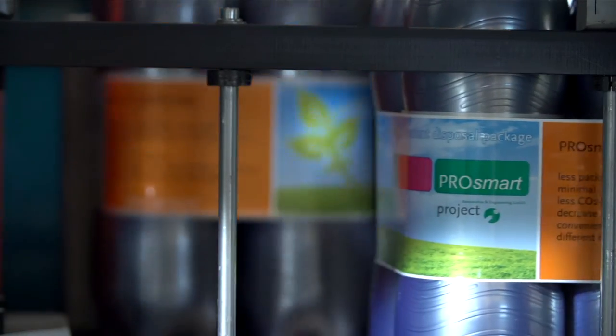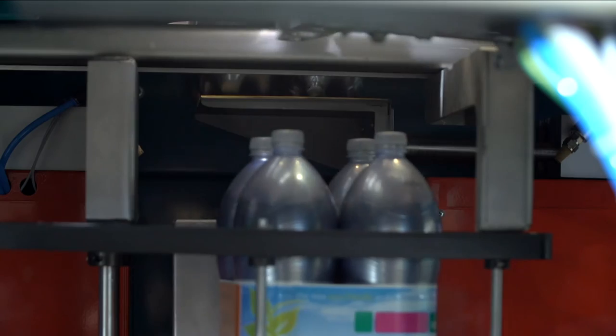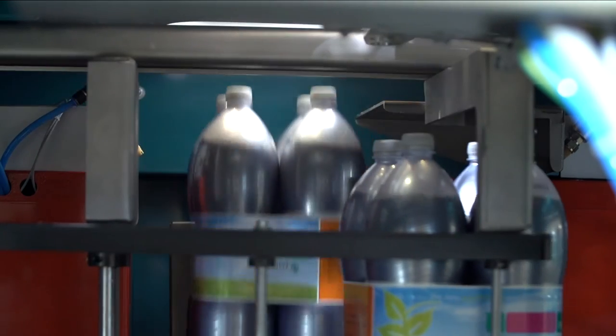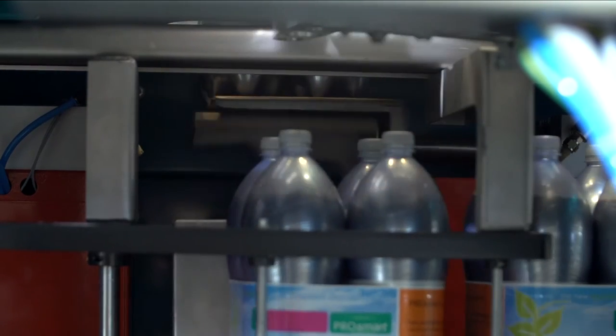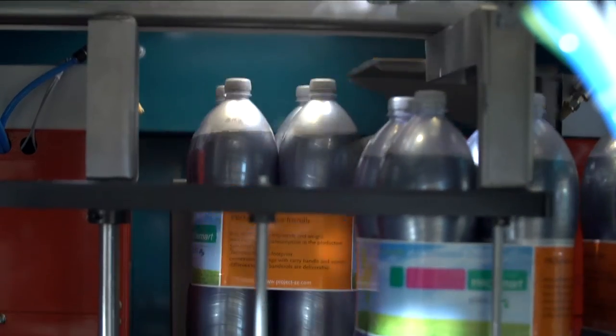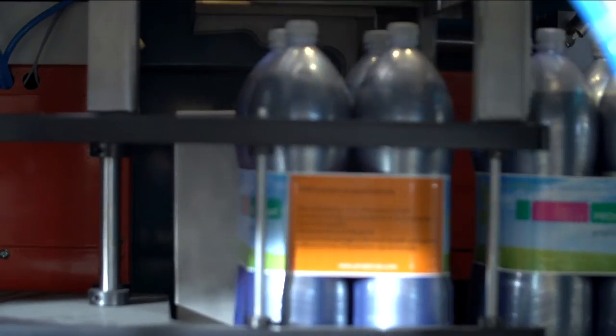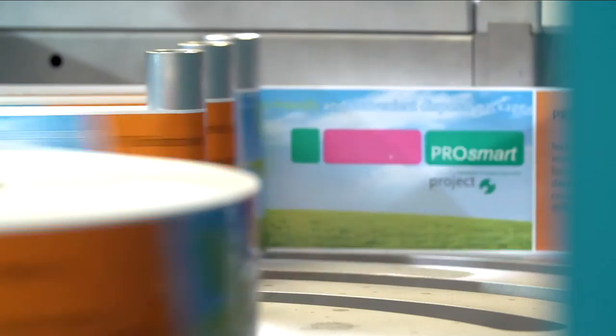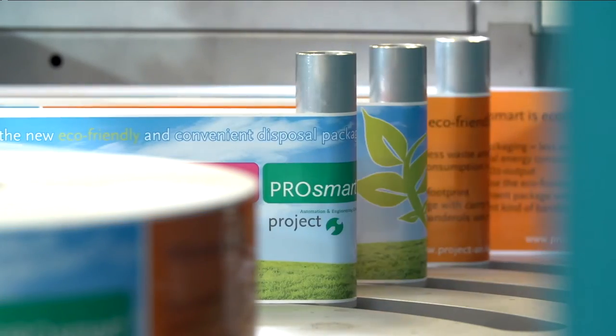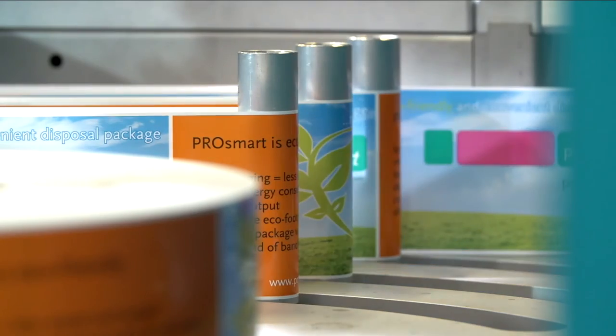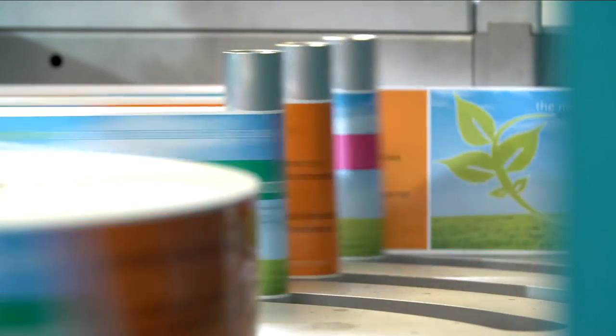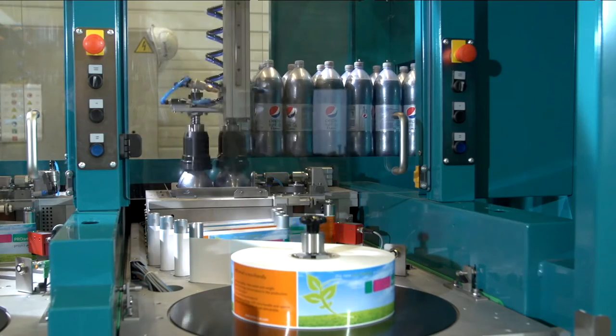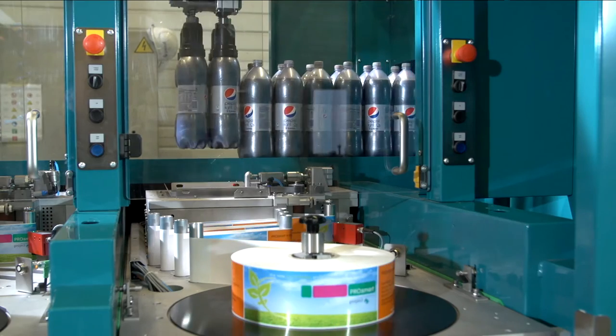The bottles used to be completely wrapped in plastic. The foil was heated which caused it to contract and form a transportable package. This process is no longer needed. That saves material and reduces energy use by some 95 percent, also cutting back on greenhouse gas emissions.